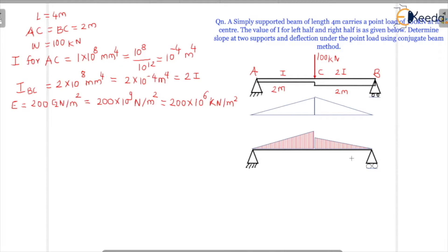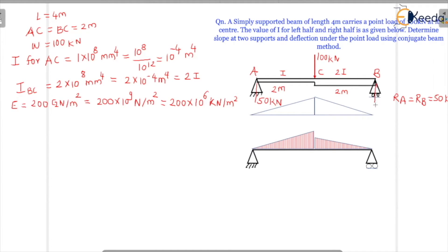Since the load is acting in the middle, RA and RB are straightforward. RA plus RB equals 100 kN, so RA and RB will each be equal to 50 kN. That I value does not matter here for the reaction calculation.